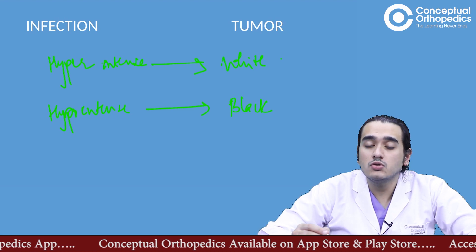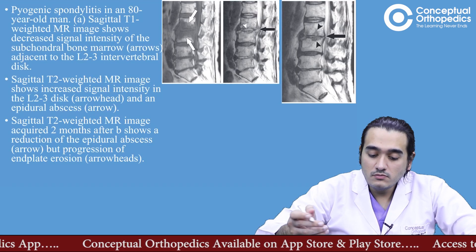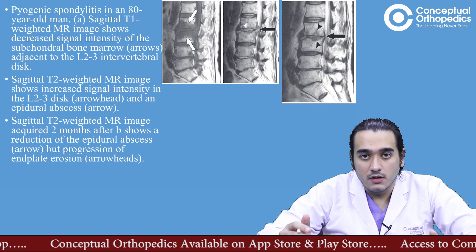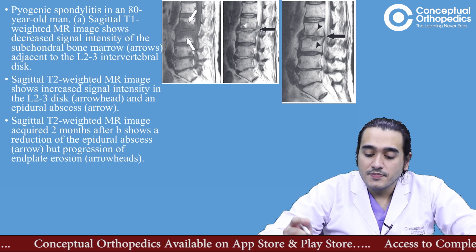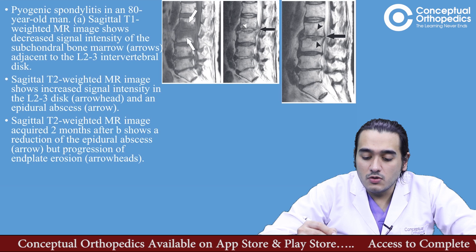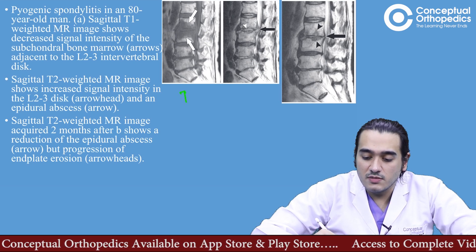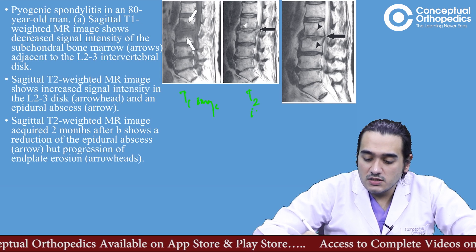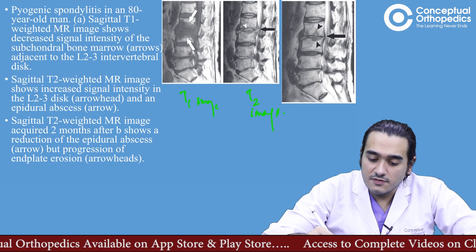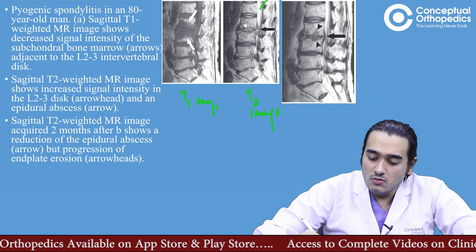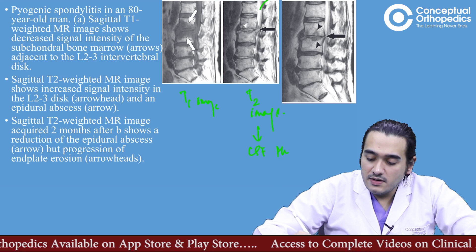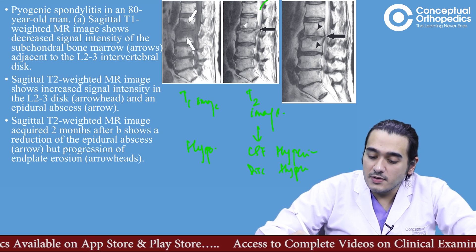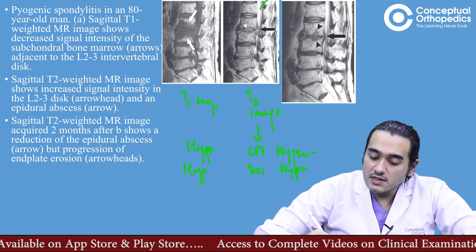Now these are the images of infection — I am telling you upfront — but why exactly is this an infection? When this MRI is put to you, first understand that the first image is a T1 image and the second is a T2 image. How do we know? Look at the intensity of CSF: the CSF in T2 is hyperintense and hypointense in T1. Along with that, the disc spaces look hyperintense in T2 and hypointense in T1.